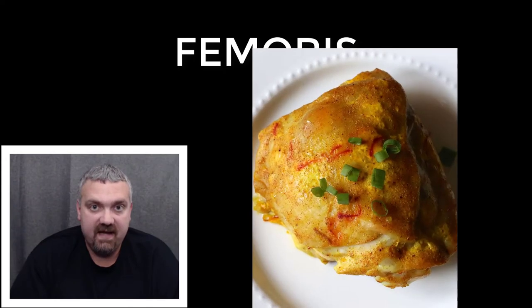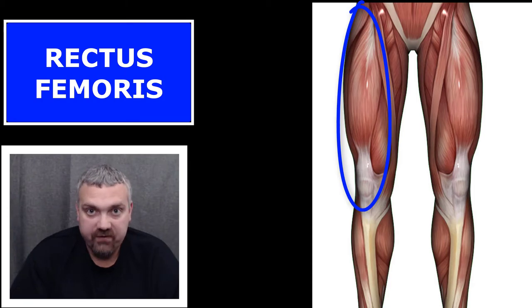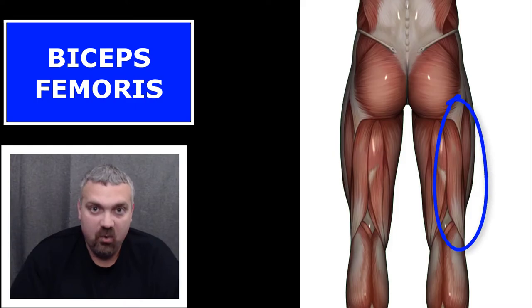Next, we have femoris. Femoris means thigh. Two key examples: we have the rectus femoris, which is a muscle that's part of your quadriceps — your thigh muscles on the front — and the biceps femoris, which is part of your hamstrings on the back.